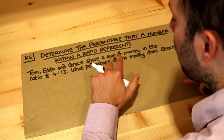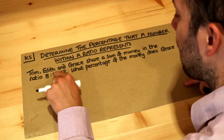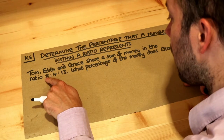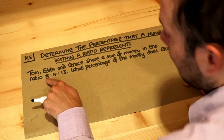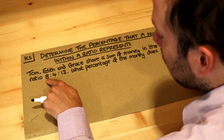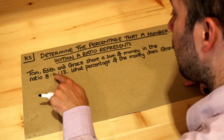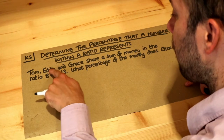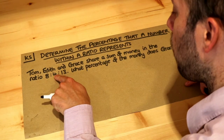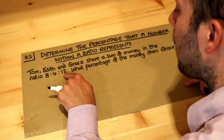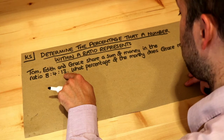Remember what a ratio represents. It means for each eight of something — let's say eight pounds or eight dollars that Tom gets — Edith would get four pounds or dollars and Grace would get 13 pounds.